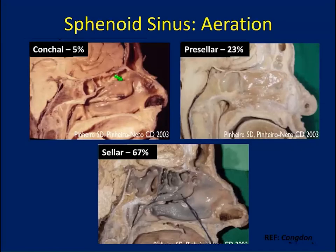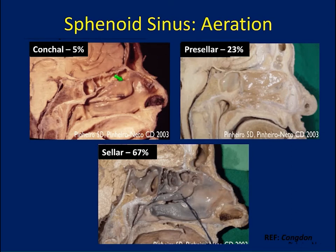When we enter into the sphenoid sinus, while this is the center of our skull-base universe, there can be variation in the amount of pneumatization that occurs. The most common is the sellar pattern of pneumatization, where there's a well-defined clival recess. There can additionally be a pre-sellar pneumatization, occurring approximately one quarter of the time, where the sella is definable but there's no clival recess. And fortunately, only 5% of the time you'll have the conchal pattern, which ablates some normal anatomic landmarks and makes identification of key neurovascular structures much more difficult.